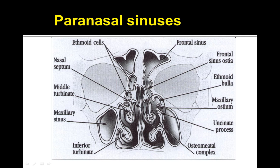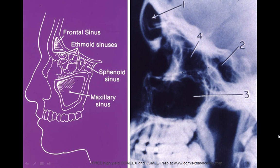Here's an overview of the various paranasal sinuses. You can view the frontal sinus, which is common, and the maxillary sinus, as well as other important anatomy components to keep in mind when evaluating a case of acute sinusitis. Here's another view showing the maxillary sinus, the sphenoid sinus, the ethmoid sinus, and the frontal sinus.